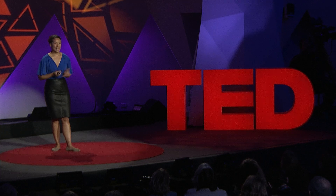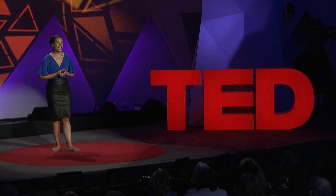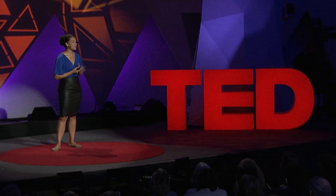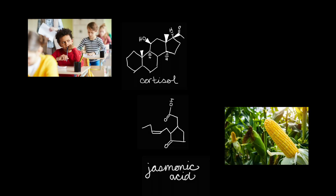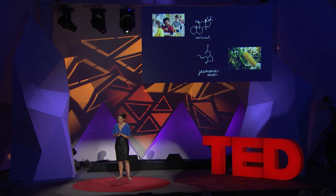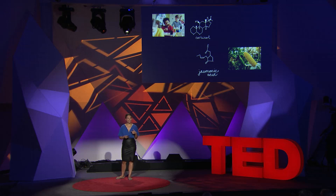Elsewhere, let's say Kansas, there's a stalk of corn, and a ladybug begins to nibble on it. And almost immediately, the plant starts to produce jasmonic acid. The jasmonic acid gives the ladybug indigestion, which quickly stops it from eating any more corn. The jasmonic acid also signals internally to the plant to start healing that wound.